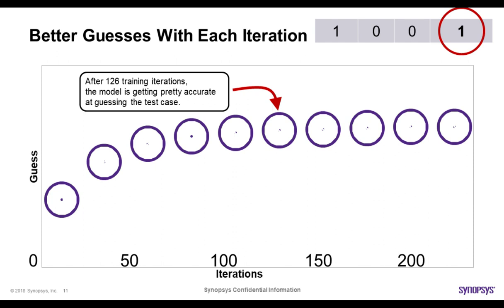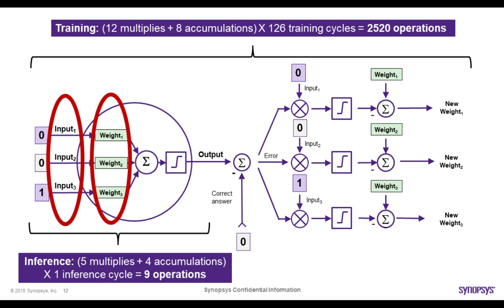The reason I'm showing you this is to give some appreciation for the amount of processing required. This is one of the main challenges for SOC development, because processing requirements have increased dramatically from traditional SOCs. For training in this very simple example: 12 multiplies plus 8 accumulations, times 126 training cycles, equals over 2,500 operations. Training is a very process-intensive activity. Even inference requires significantly fewer operations than training, but it is still substantial. This is why specialized processors are being developed to handle neural networks.